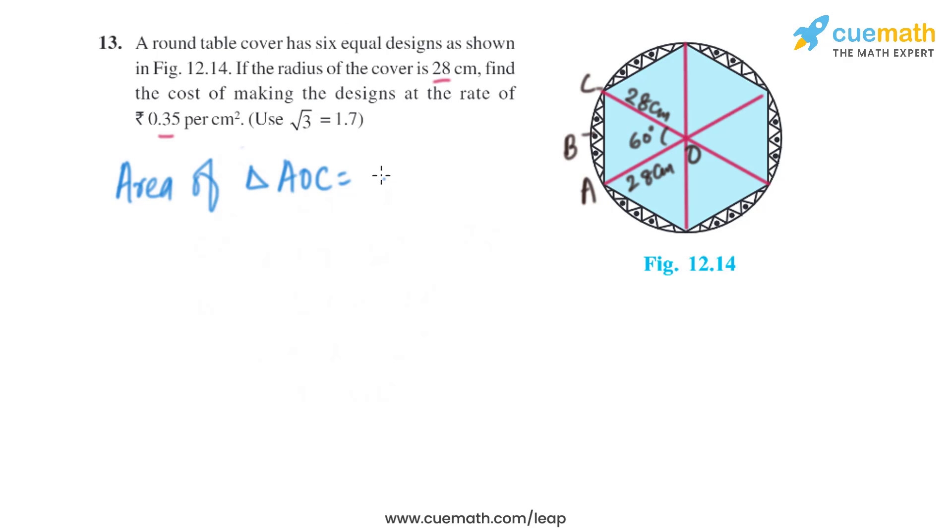We know how to find the area of an equilateral triangle, that is basically root 3 divided by 4 into a squared, where a is the side of the triangle. So it is root 3 divided by 4 multiplied by 28 squared. The value of root 3 is given as 1.7, so on solving this we'll get the area of triangle AOC as 333.2 square centimeters.